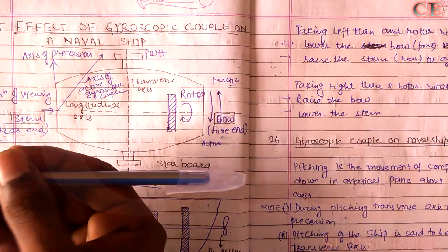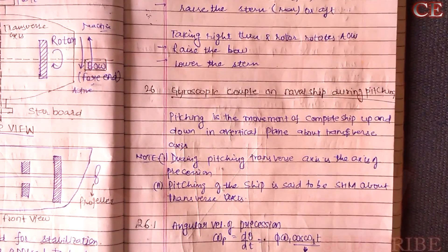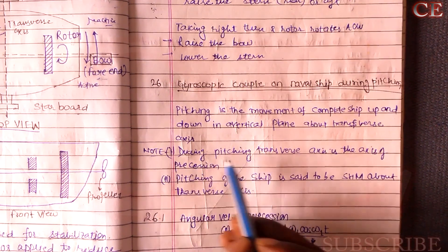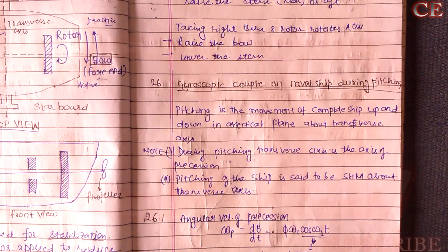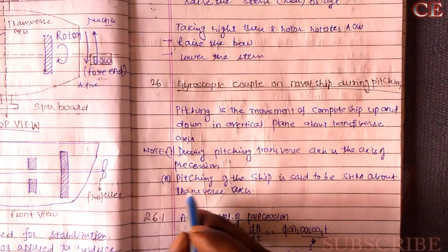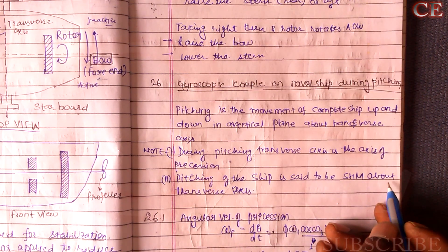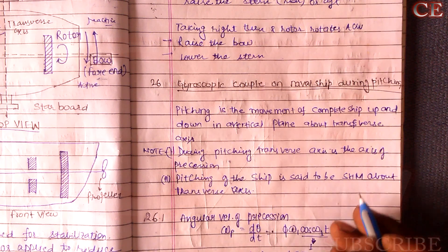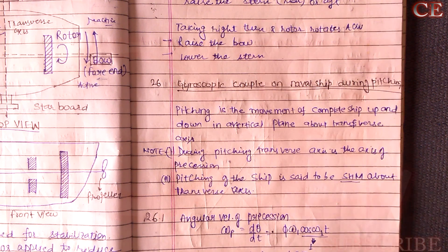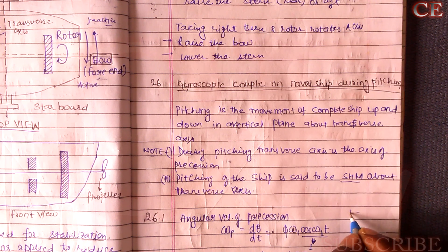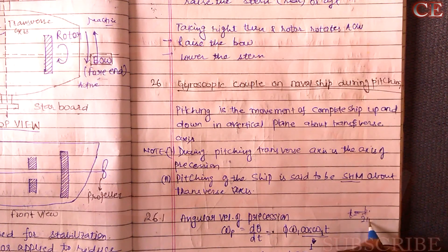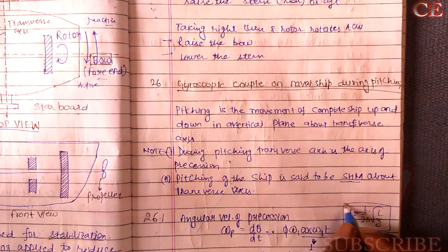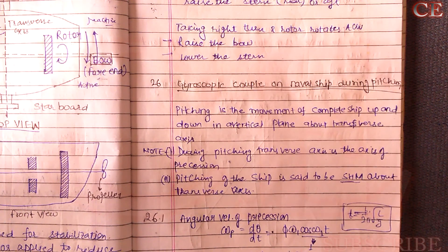During pitching, two things need to be considered. First, the transverse axis is the axis of precession about which precession occurs. Second, pitching of the ship is assumed to be simple harmonic motion (SHM) about the transverse axis. The time period for SHM is T = 1/(2π) × √(α/g). The angular velocity of precession is ω_p = dθ/dt.